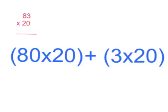First we need to do 80 times 20. 8 times 2 is 16. Now we just have to add two zeros because there was a 0 in the 80 and a 0 in the 20.